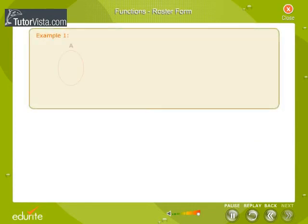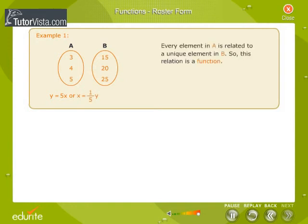Example 1: Set A has elements 3, 4, 5. Set B has elements 15, 20, 25. The relation between them is Y is equal to 5X or X is equal to 1 by 5Y. Every element in A is related to a unique element in B. So this relation is a function. The Roaster Form of the function is {(3, 15), (4, 20), (5, 25)}.